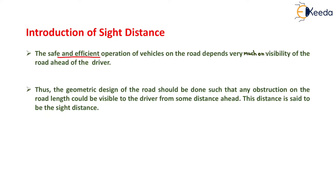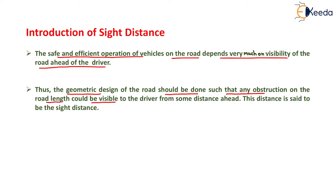The safe and efficient operation of a vehicle on the road depends very much on the visibility of the road ahead of the driver. The geometric design of the road should be done such that any obstruction on the road line could be visible to the driver from some distance ahead.